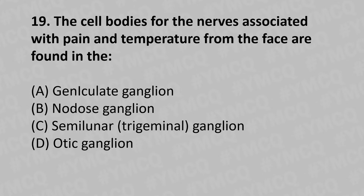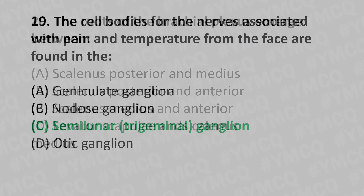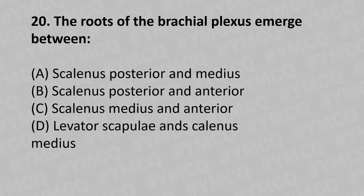Moving to our nineteenth question: the cell bodies for the nerves associated with pain and temperature from the face are located in which ganglion? Option A: geniculate ganglion. Option B: nodose ganglion. Option C: semilunar or trigeminal ganglion. Option D: optic ganglion. The answer is Option C: semilunar ganglion.